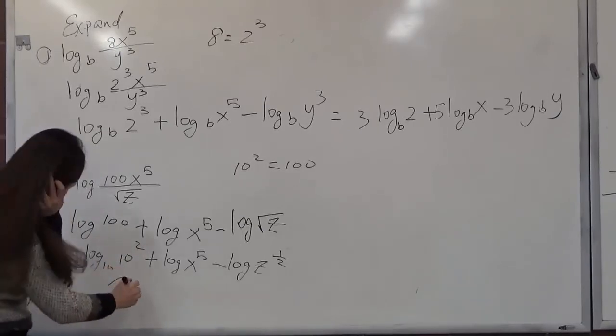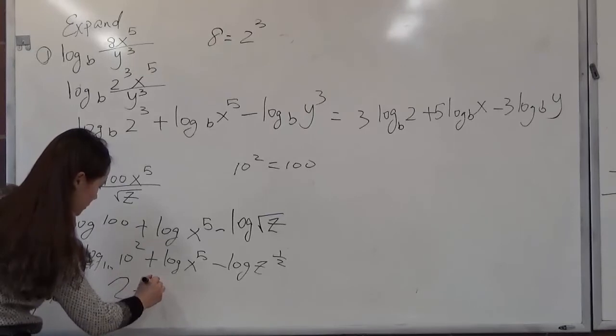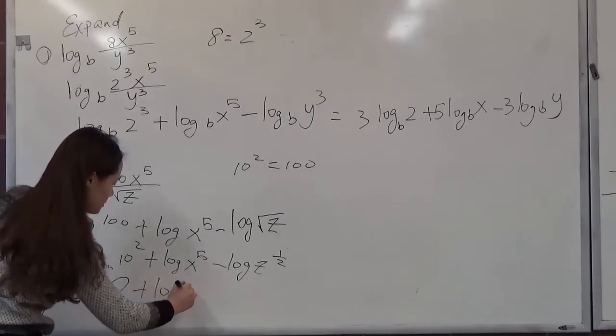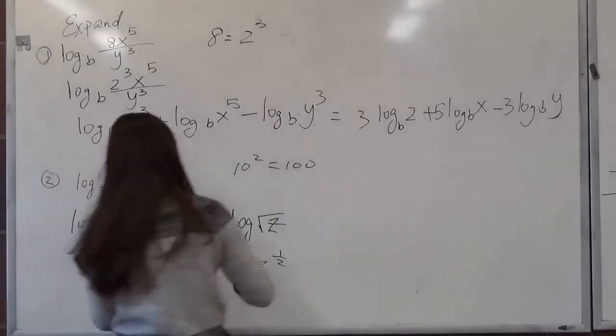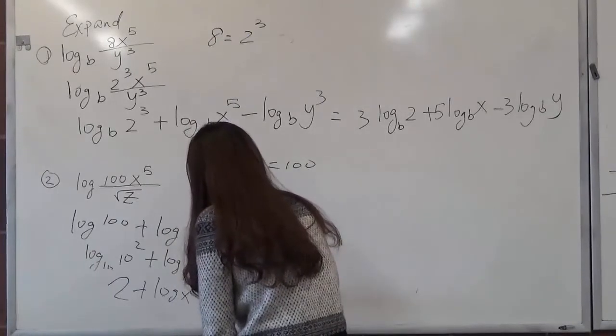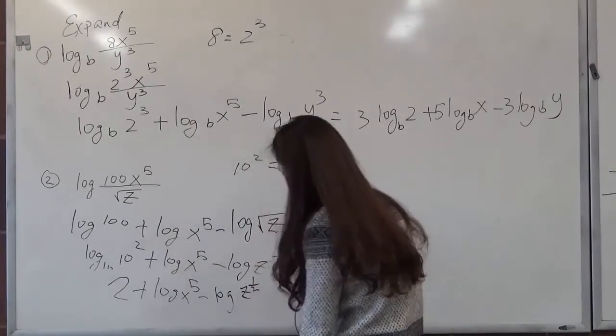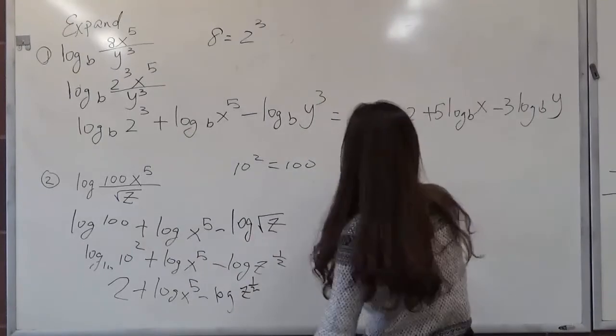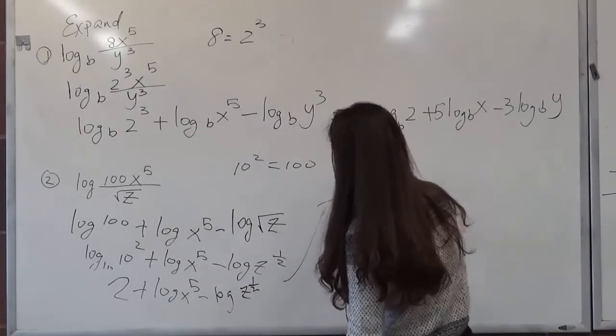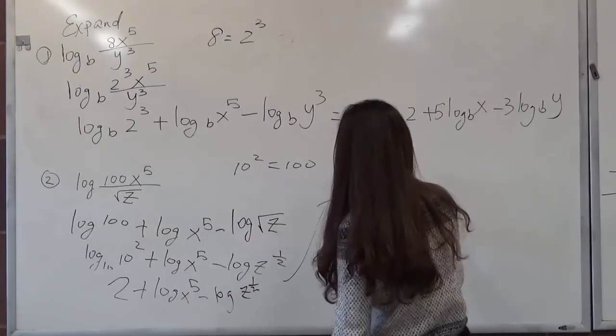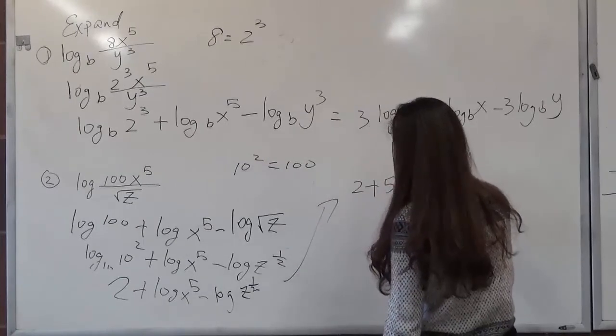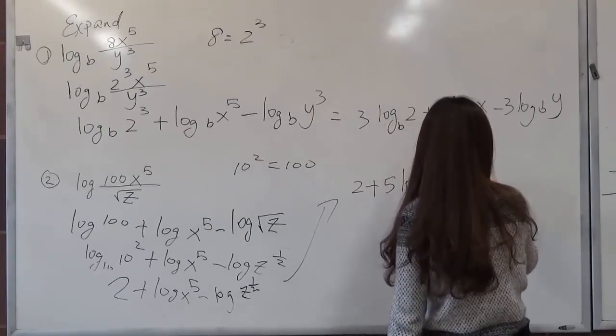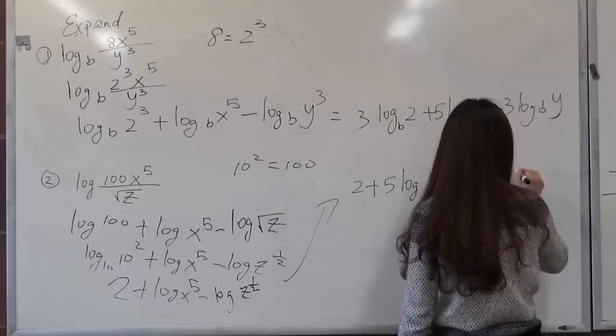So that would equal 2 plus 5 log x minus 1 half log z.